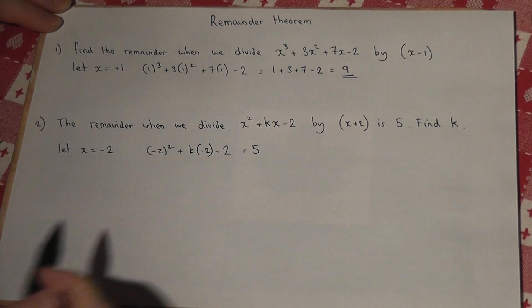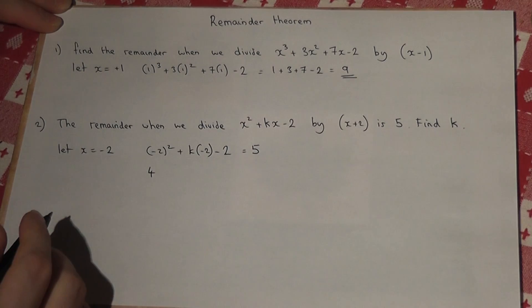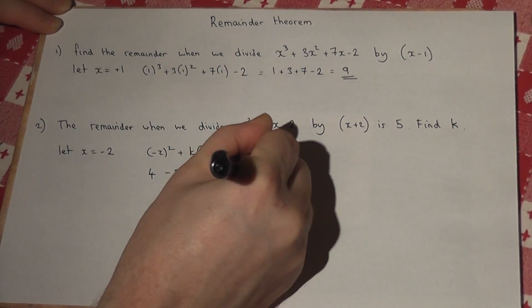So this gives us an equation to solve for k. Minus 2 squared is 4, take away 2k, take away 2 equals 5.